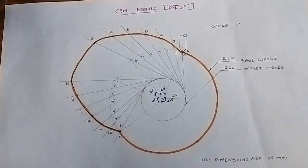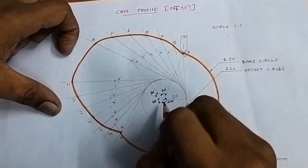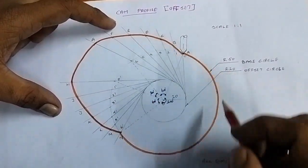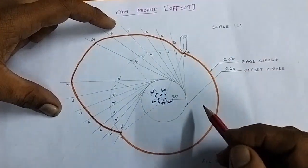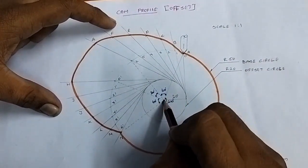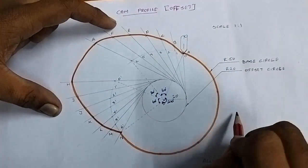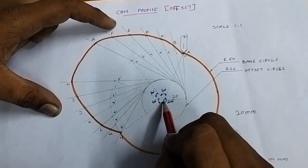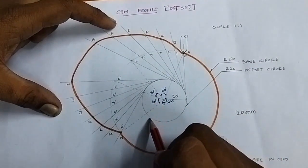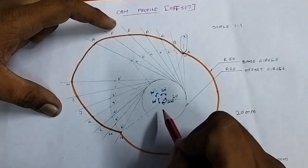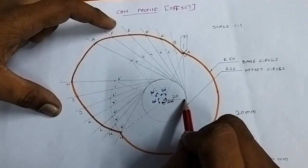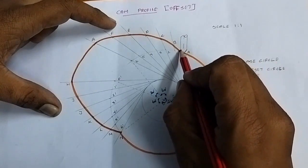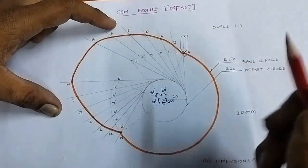Now coming to the offset cam. First, draw the base circle with center O and 50 mm radius. Then draw the offset circle with 20 mm radius from the same center. Mark the horizontal line and draw a vertical line tangent to the offset circle — this vertical line indicates the initial position of the follower.